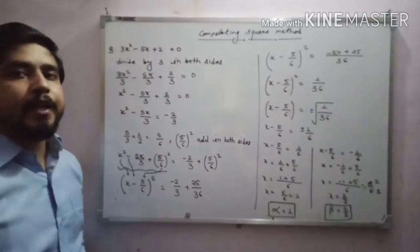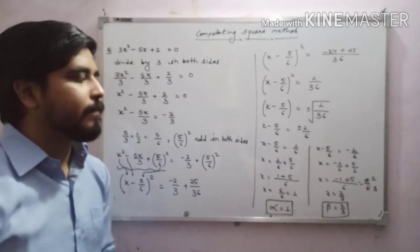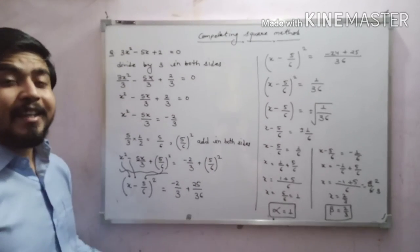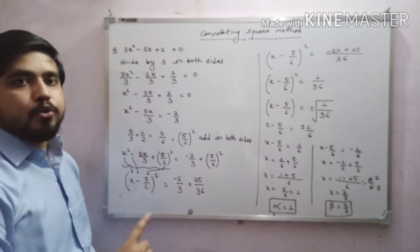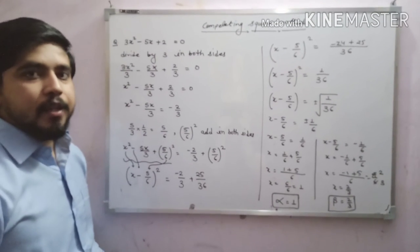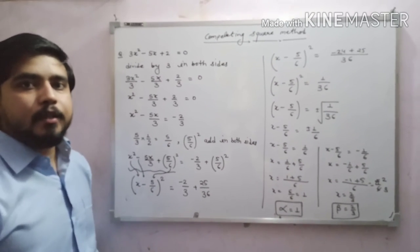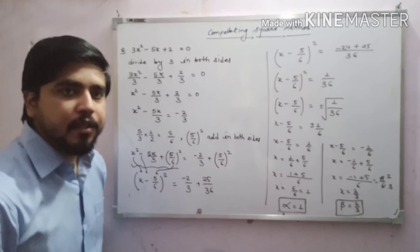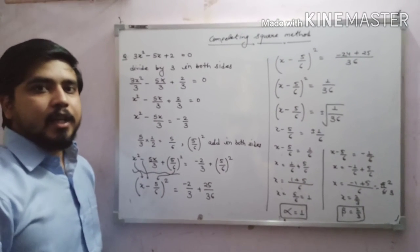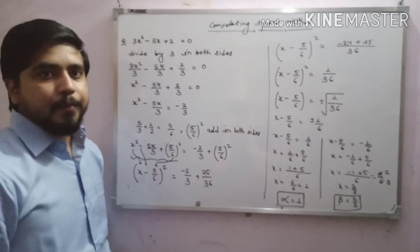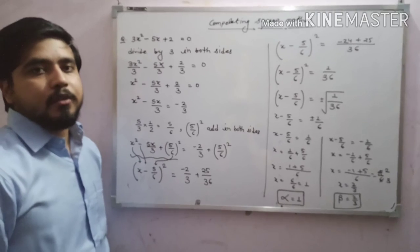This is called the completing the square method, by which we can get two zeros of a quadratic polynomial. This is a specific method — if a question asks you to use this method, then you will use it; otherwise there is no need. But it is a very simple method for solving any quadratic equation. Thank you all. In the next class we will discuss a new method — please like this video and subscribe to the channel.